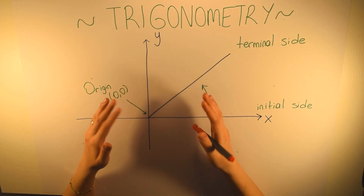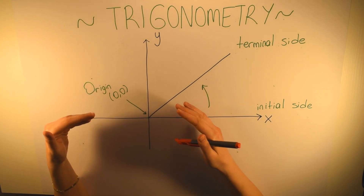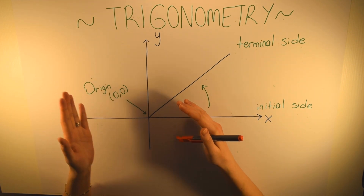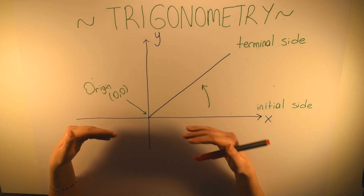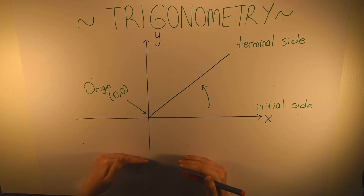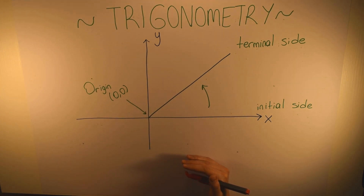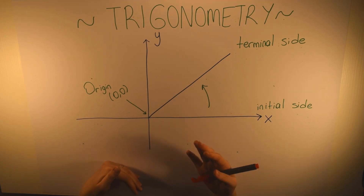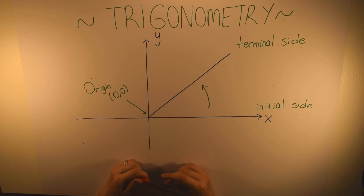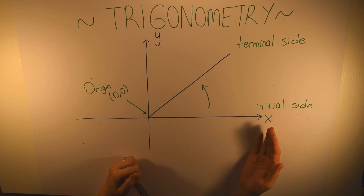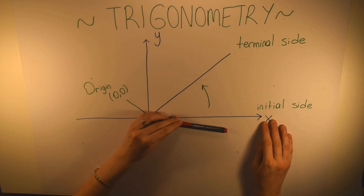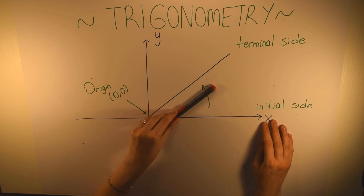Trigonometry is a branch of mathematics that focuses on relationships between the sides and angles of triangles. Since trigonometry focuses on the relationship of sides and angles of a triangle, let's go over how angles are measured. Angles are formed by an initial side and a terminal side, and an angle is measured by the amount of rotation from the initial side to the terminal side.